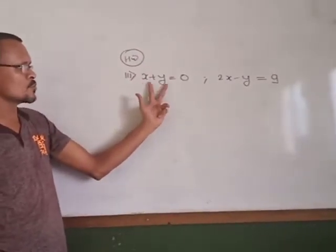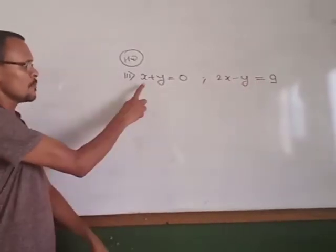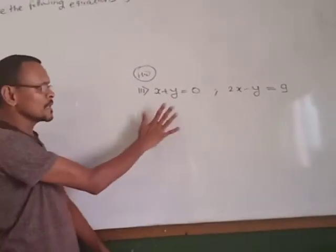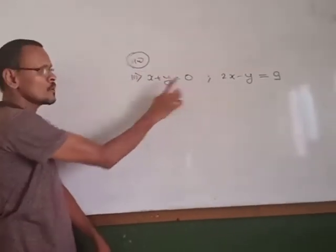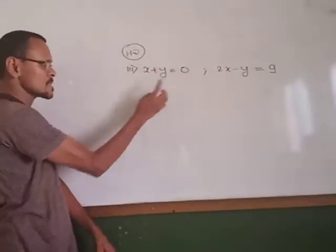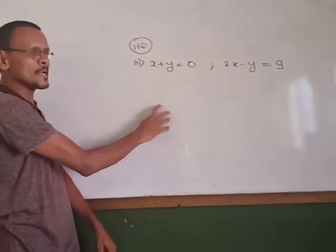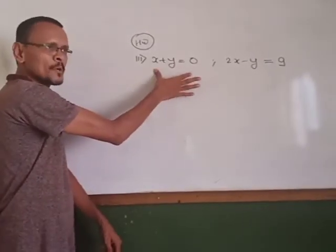One example for over: x plus y equal to 0, and 2x minus y equal to 9. For this, first we make the table. y equal to minus x. Therefore if x equals 1, then y is minus 1.